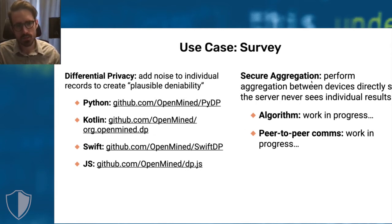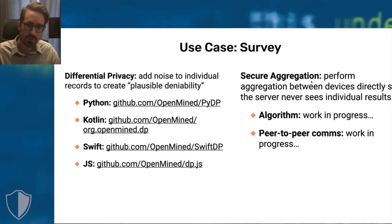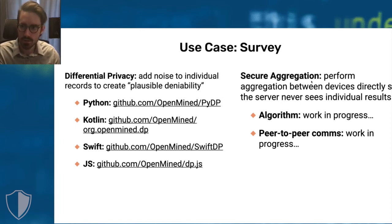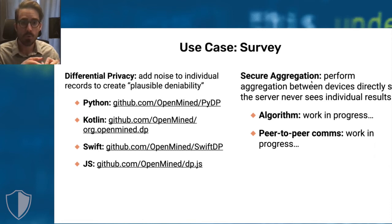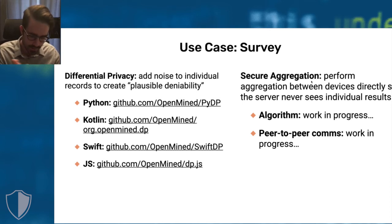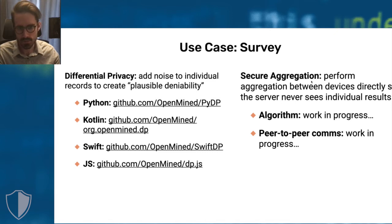There's also another group of algorithms that tries to do this without adding noise, so you can get basically the exact answer without ever actually seeing any individual person's record. This is called secure aggregation. Whereas differential privacy has a host of libraries — we've taken the most robust differential privacy library from Google, which is a C++ library, and wrapped it in languages necessary for iPhone and Android apps, whether JavaScript-based or native.